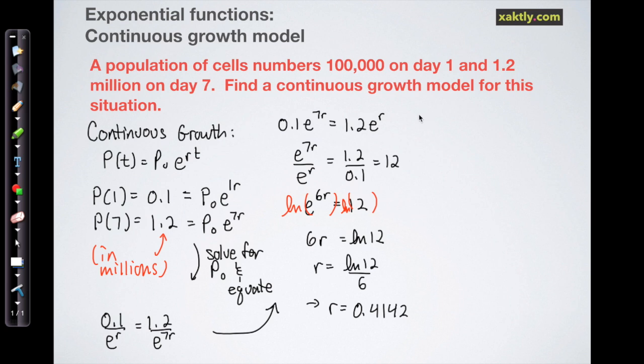So now we need to find P_0, that's the last thing left. And just like we would do on linear equations like a system of linear equations, we'll just plug the r that we already have into one of our equations. So I'll just use P(1) is equal to P_0 e^(0.4142) times one and we'll solve that.